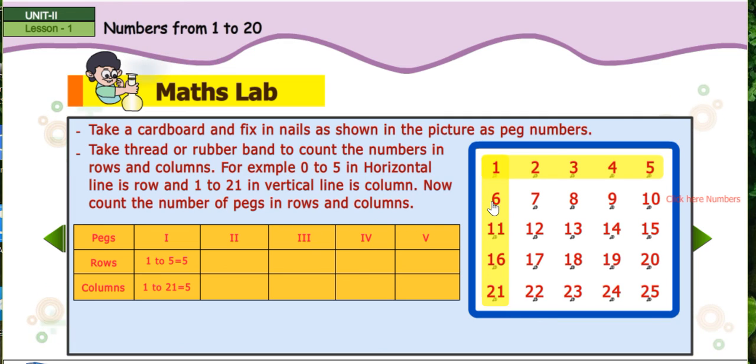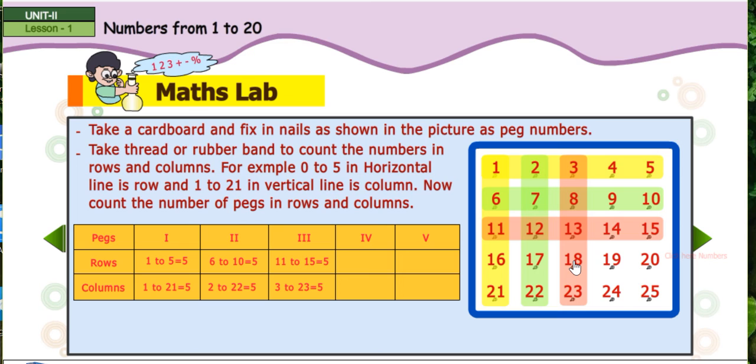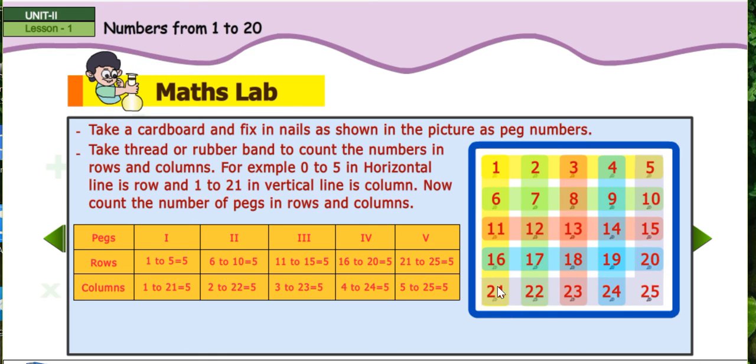One to twenty-one equal to five. Six to ten equal to five. Two to twenty-two equal to five. Eleven to fifteen equal to five. Three to twenty-three equal to five. Sixteen to twenty equal to five. Four to twenty-four equal to five. Five to twenty-five equal to five. Twenty-one to twenty-five equal to five.